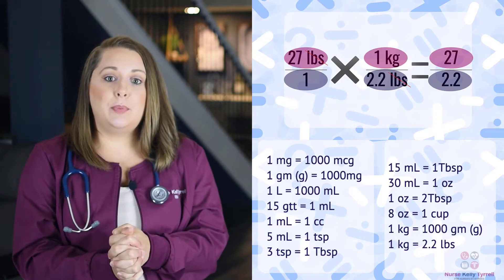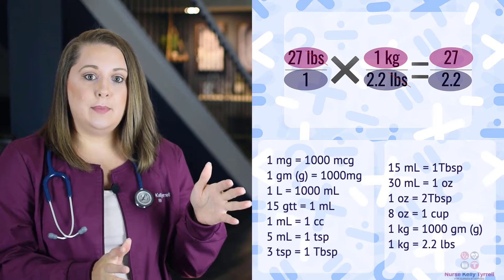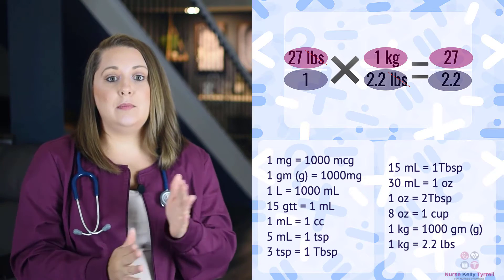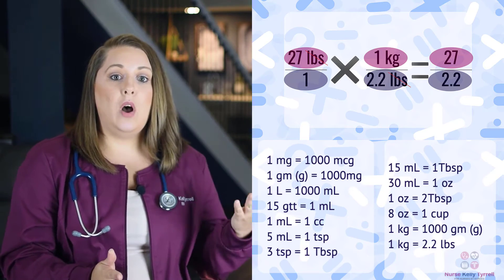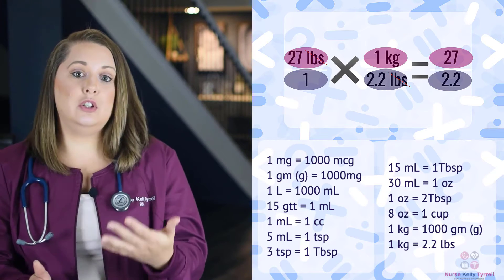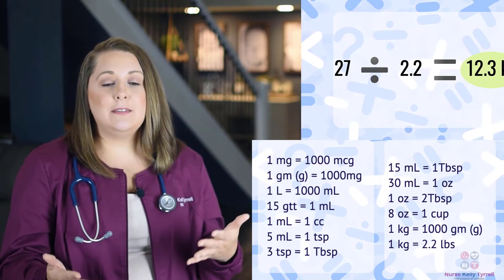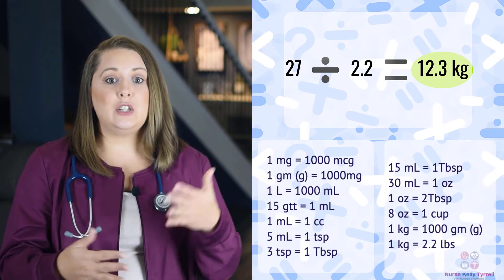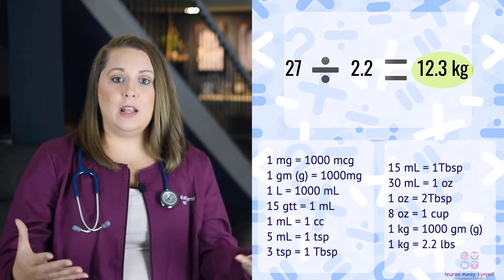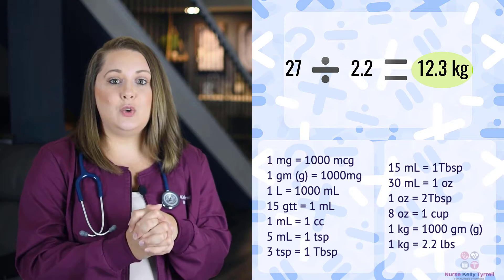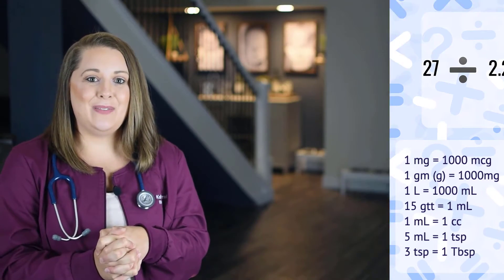Next, we're going to multiply straight across the top and then straight across the bottom. So 27 times 1 equals 27, and 1 times 2.2 equals 2.2. The last step is to divide: 27 divided by 2.2 gives you 12.27 kilograms, or 12.3 if you round to the nearest tenth.